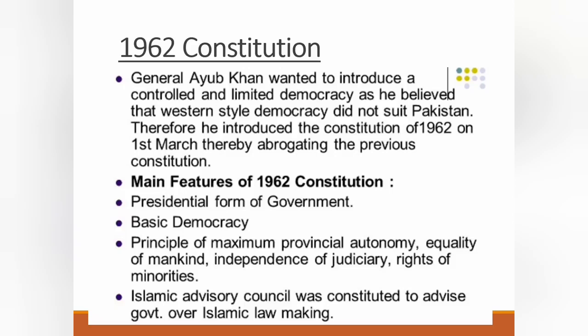Khan introduced a new constitution with provisions suggesting a controlled democracy. The main features of the 1962 constitution were: a presidential form of government, basic democracy introduced, principle of maximum provincial autonomy, equality of mankind, independence of judiciary, and the rights of minorities were accepted. An Islamic Advisory Council was also constituted to advise the government on Islamic law making.